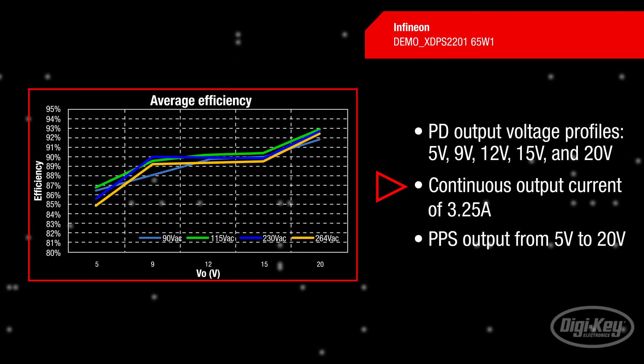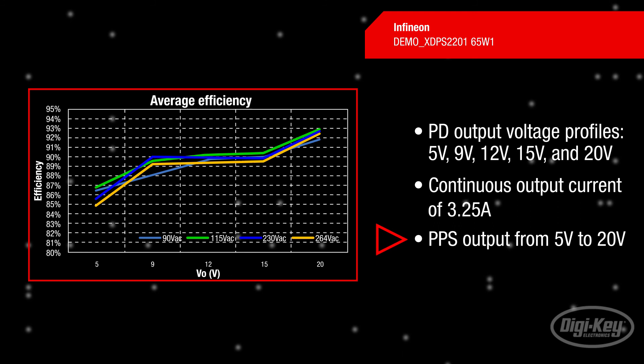In addition, the demo board supports PPS output from 5V to 20V with the voltage step defined by the PD device. This design leads to a minimum efficiency of 93.5% at nominal power.